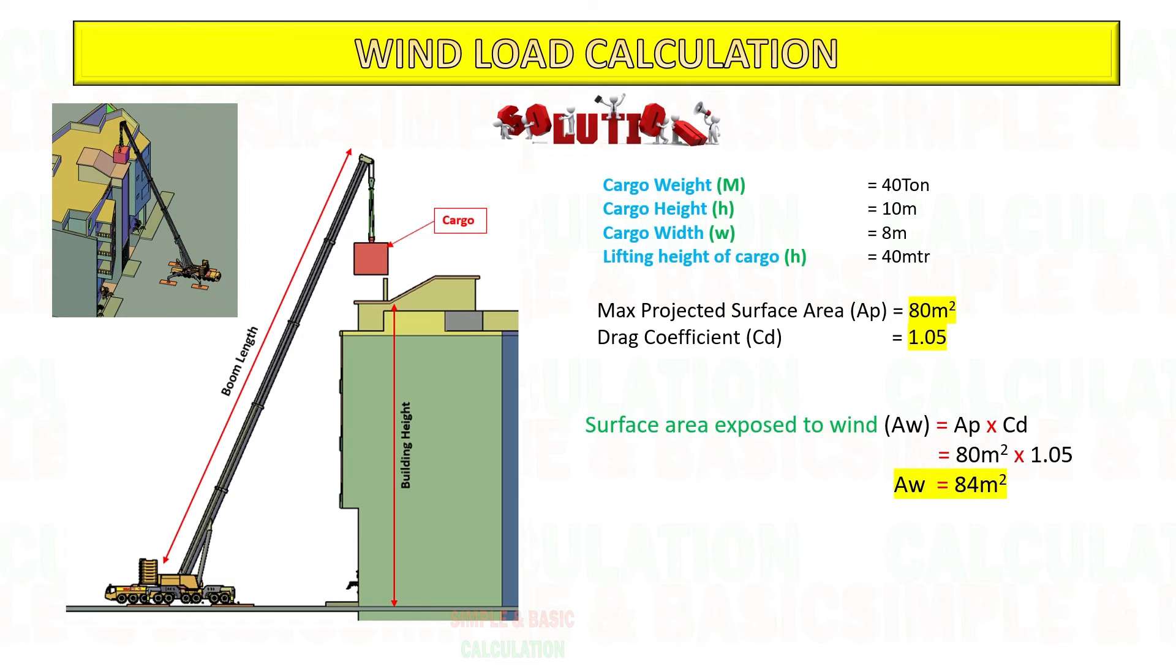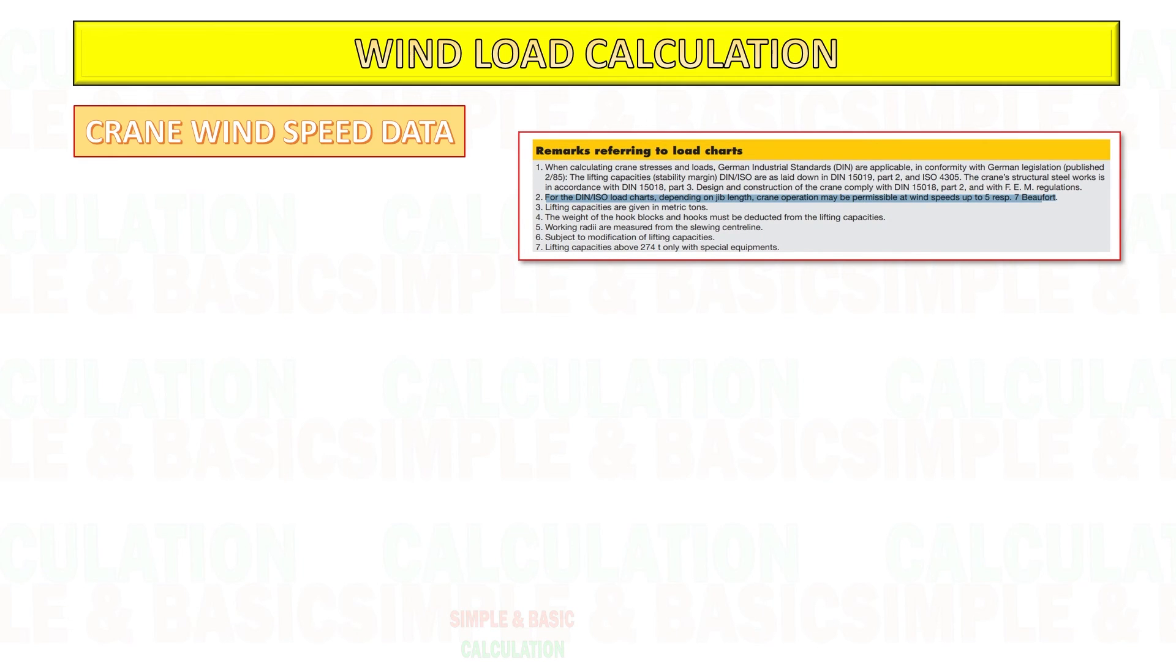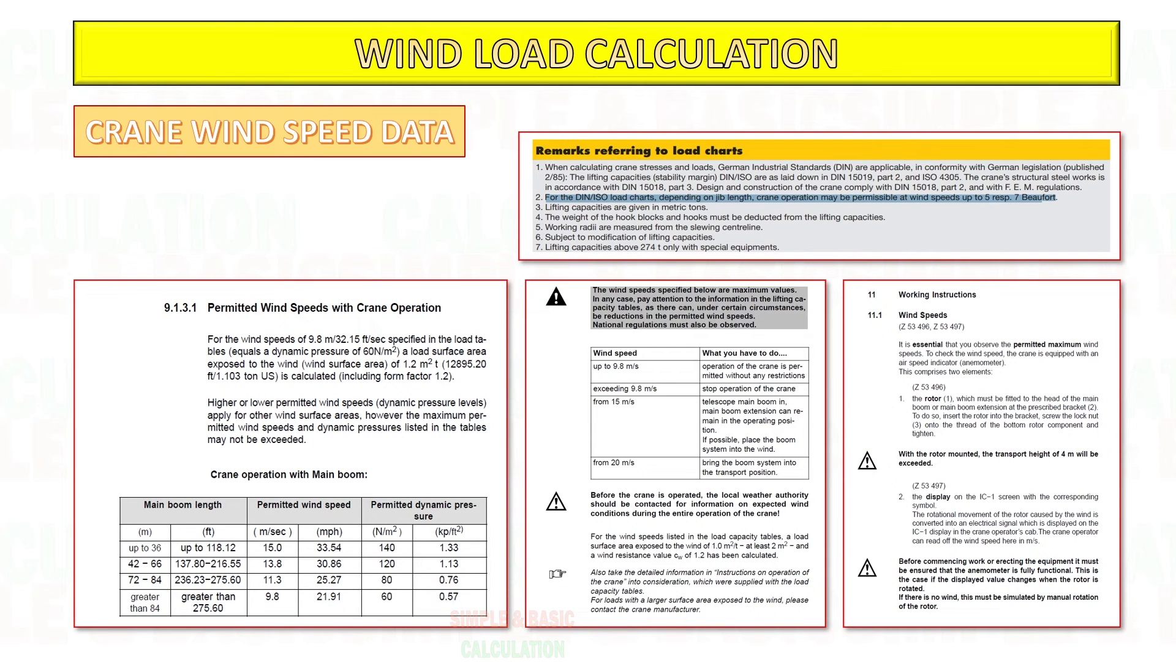This is the sample crane data permissible wind speed based on the boom length of the crane. You can check your crane manufacturer manual based on the configuration you will use.